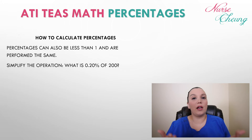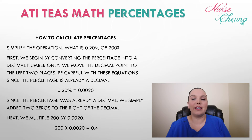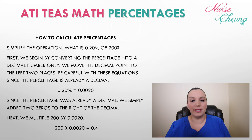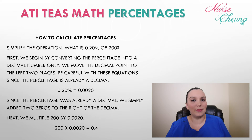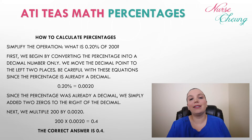Just like percentages can be above 100%, they can also be less than 1. For example, what is 0.2% of 200? First, we convert the percentage into a decimal by moving the decimal two places to the left. So 0.2% becomes 0.0020 — because it is already technically a decimal, we're really just adding two zeros to the right side of the decimal. Now we multiply 200 by 0.002, and our final answer is 0.4.